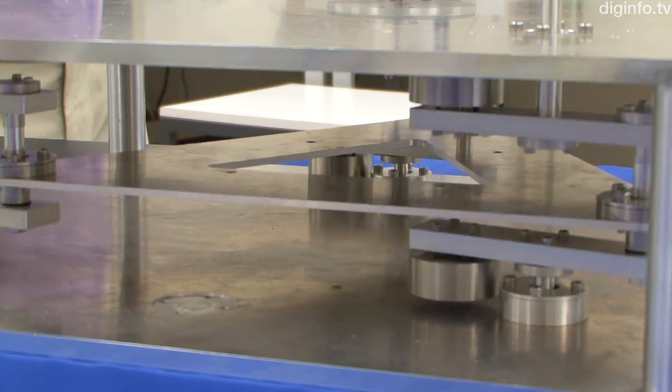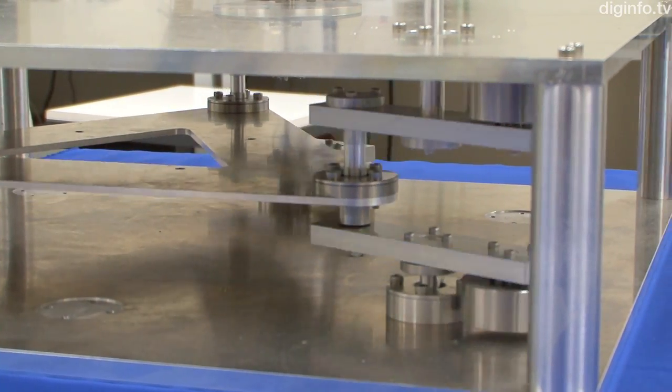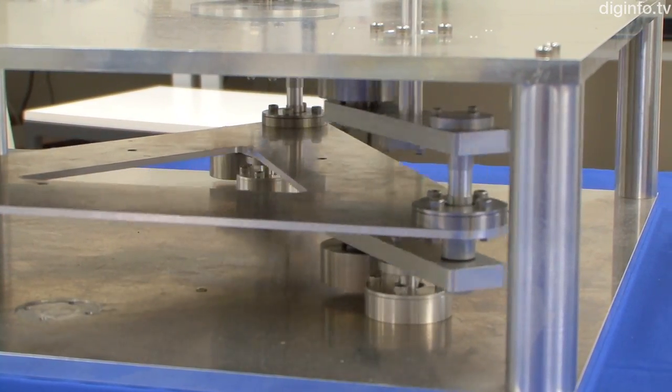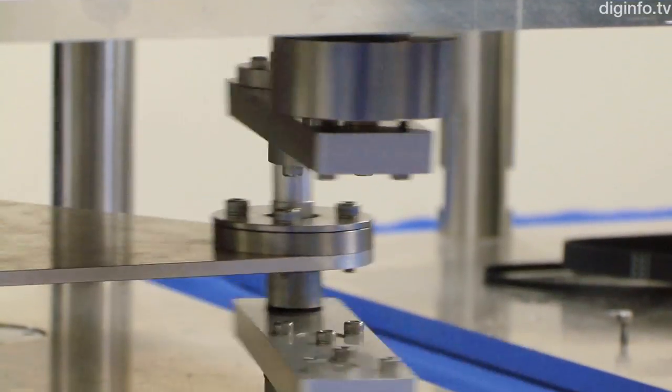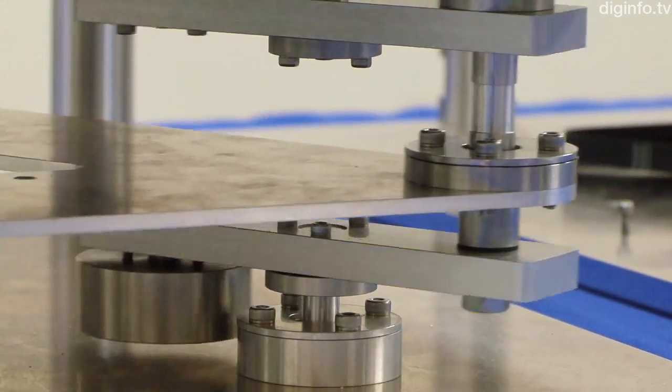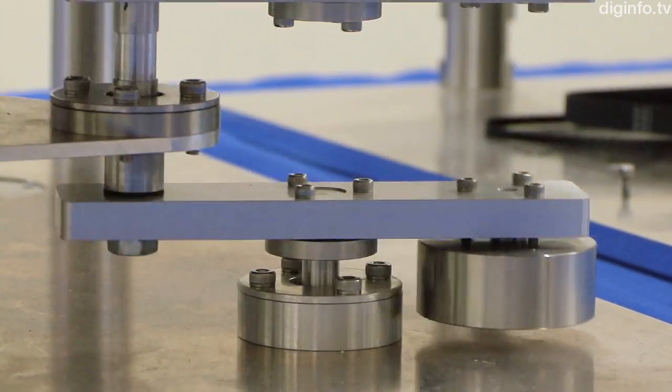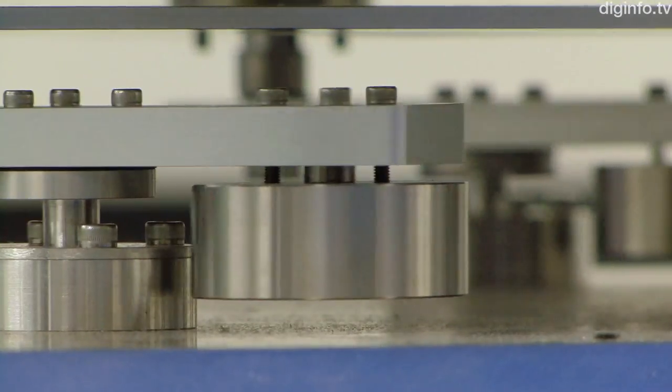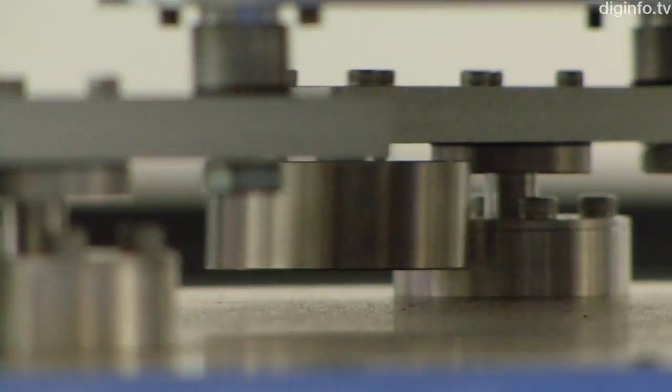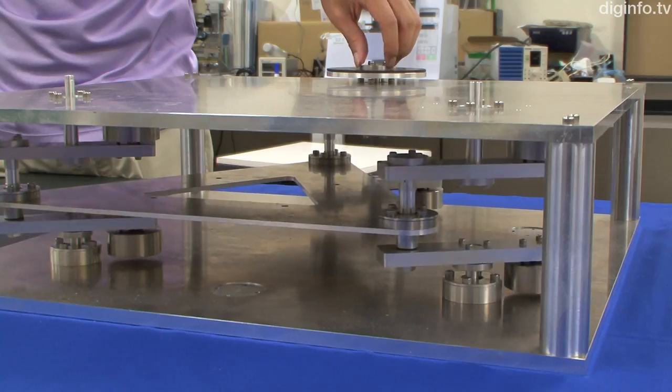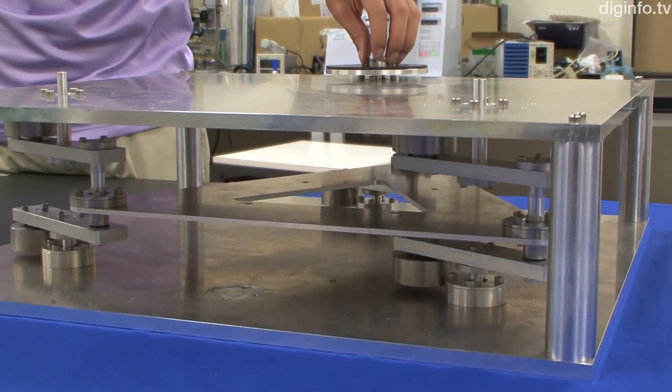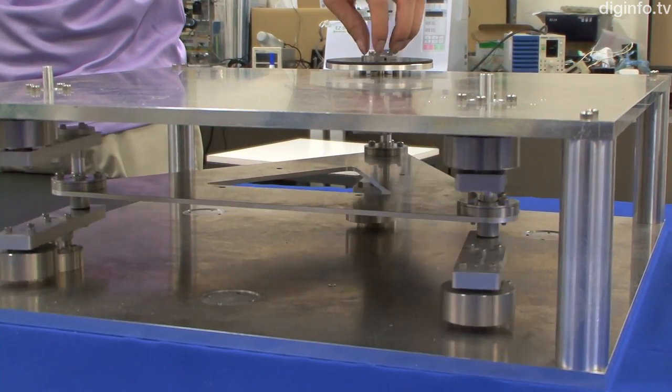A research group led by Professor Norio Inou and assistant professor Hitoshi Kimura at the Tokyo Institute of Technology has developed technology for testing a three-axis accelerometer. It can measure not only the sensitivity of each axis but also the direction vector of each sensor to an accuracy of one thousandth of a degree. This technology works by generating a uniform circular motion which imposes sine wave acceleration on three sensors simultaneously.